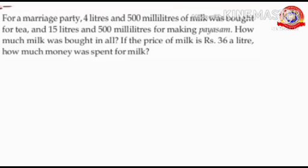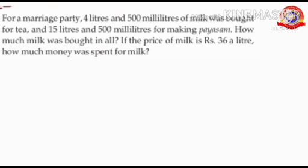Let's do the first question. For a marriage party, 4 liters and 500 ml of milk was bought for tea and 15 liters and 500 ml for making pies. How much milk was bought in all? If the price of milk is 36 rupees a liter, how much money was spent for the milk?